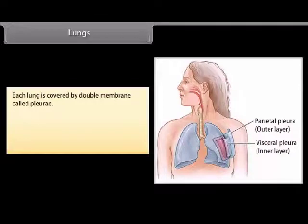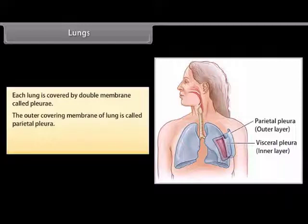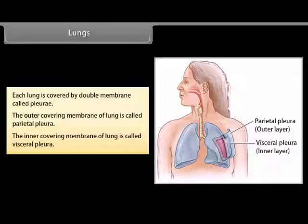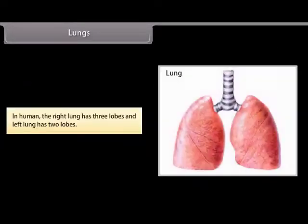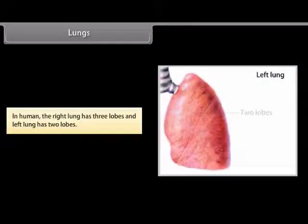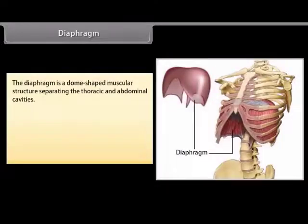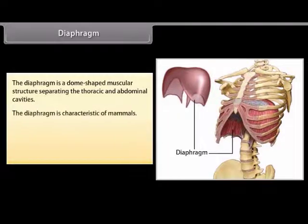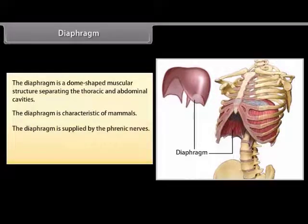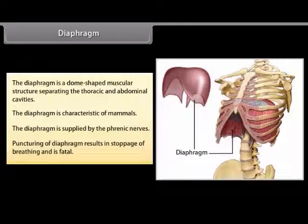Each lung is covered by a double membrane called the pleura. The outer covering membrane is called the parietal pleura, and the inner covering membrane is called the visceral pleura. In humans, the right lung has three lobes and the left lung has two lobes. The diaphragm is a dome-shaped muscular structure separating the thoracic and abdominal cavities. It is characteristic of mammals, supplied by the phrenic nerves, and puncturing of the diaphragm results in stoppage of breathing and is fatal.